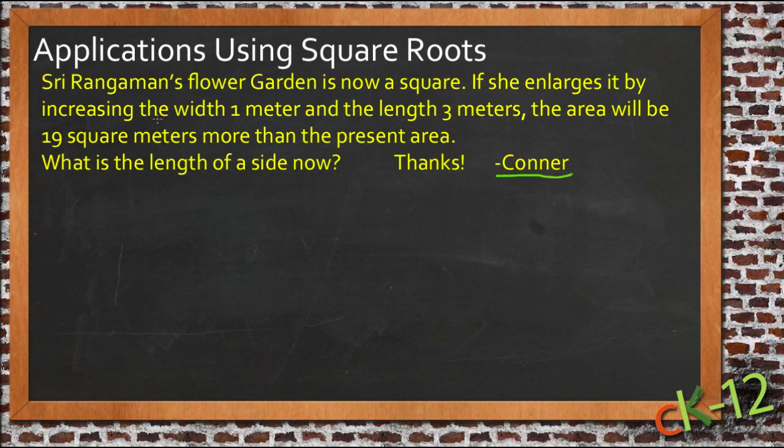So Connor, it says that Sri Rangman's flower garden is now a square. If she enlarges it by increasing the width by one meter and increasing the length by three meters, the area will be 19 square meters more than it is right now. And then you need to find out what the length of the side is now. So let's take a look at what we know.